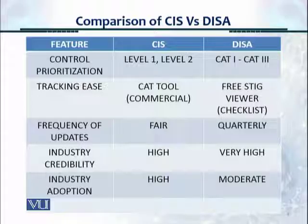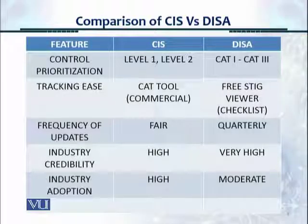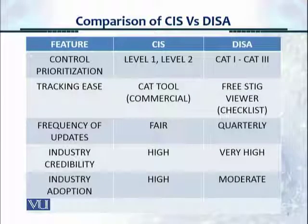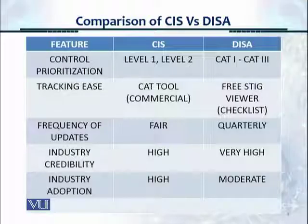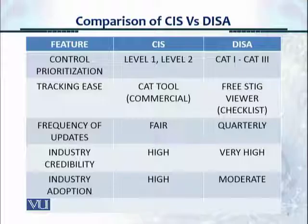The frequency of updates for CIS is fair. For DISA, the frequency is higher and much better — it's quarterly and fixed, and they also issue ad hoc updates in between, sending emails to notify when a new STIG has come out. The industry credibility for CIS is very high; for DISA, it's excellent and most credible, but it also carries some sensitivities around being a military standard. Industry adoption is high for CIS, and moderate for DISA, as it's seen as a more serious and intensive framework.